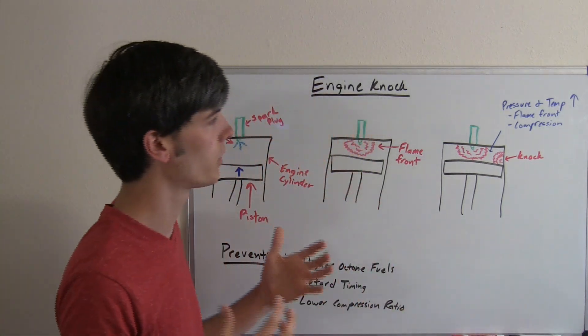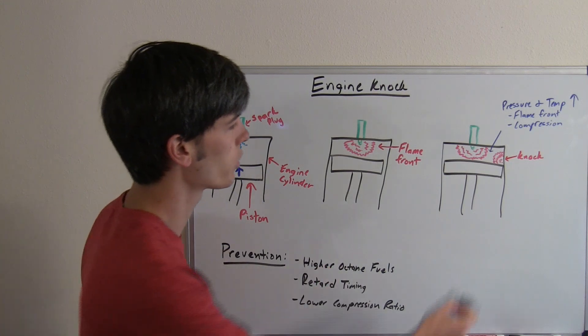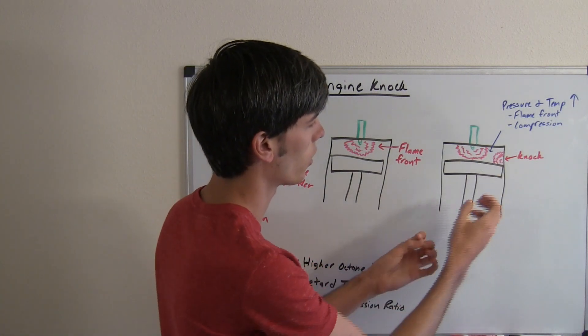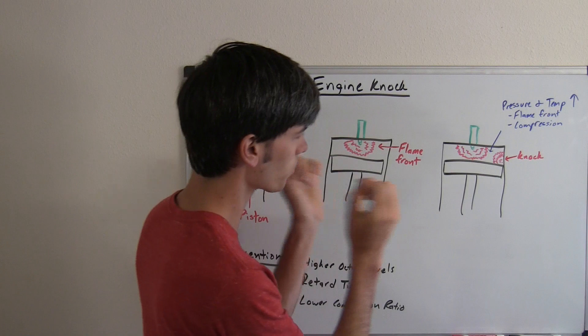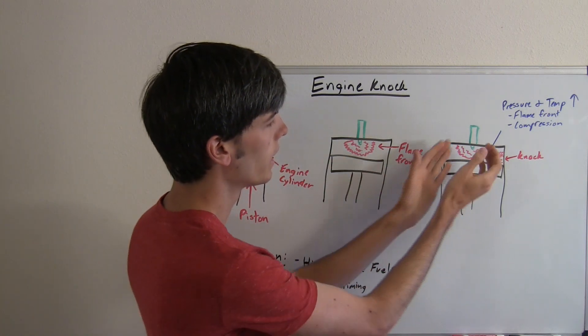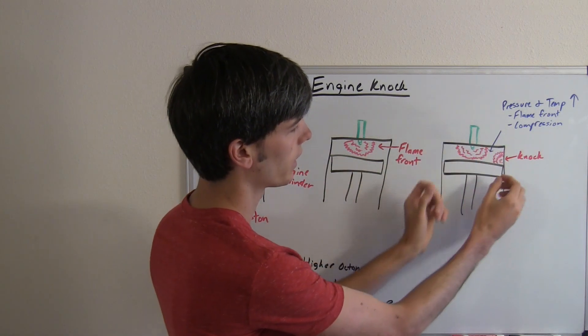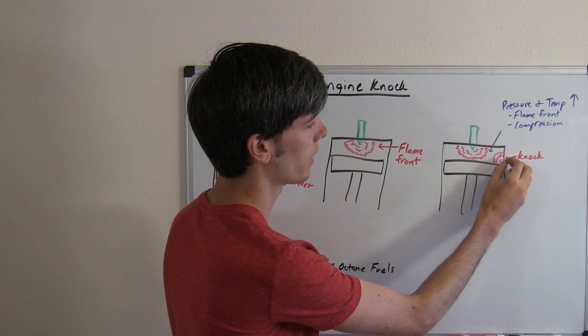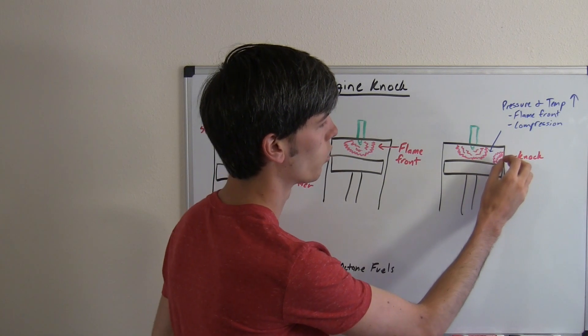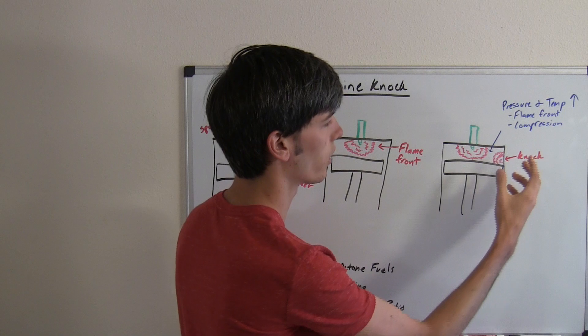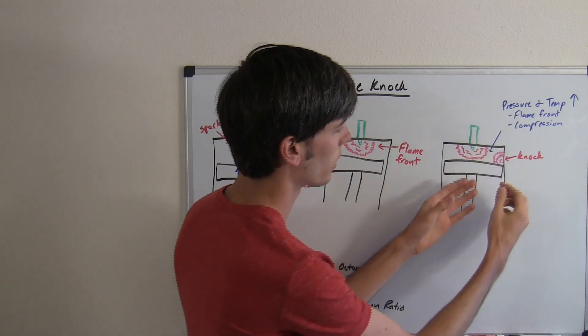When you have high pressure, you're increasing the temperature. When you increase the temperature, you can have ignition occur on its own with an air-fuel mixture. So when you have knock, that flame front is expanding, and then that high pressure, high temperature area will actually ignite on its own, creating a separate flame front.